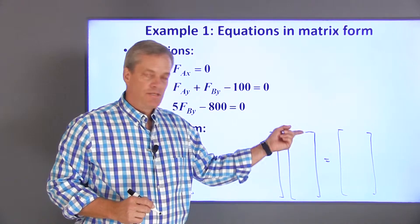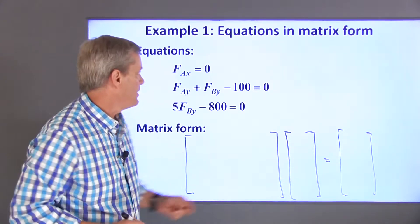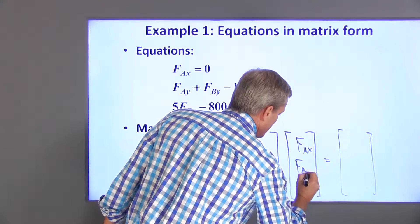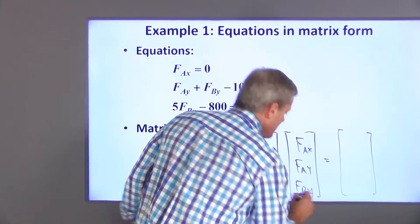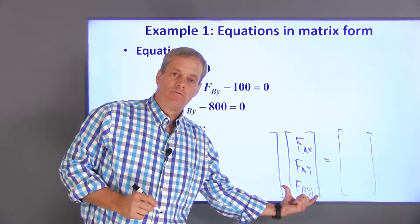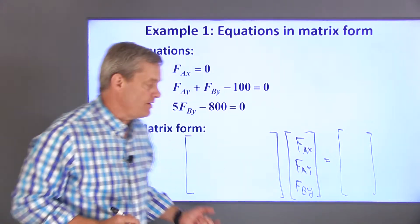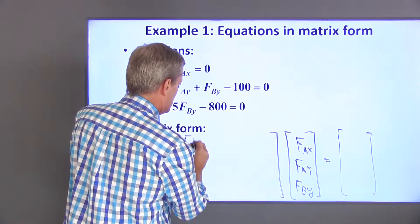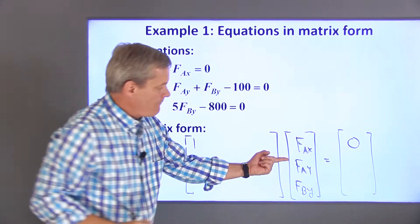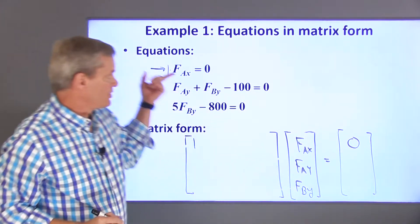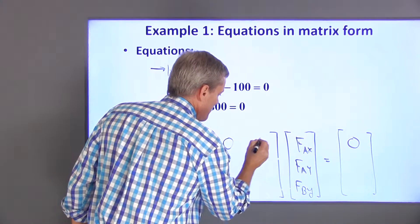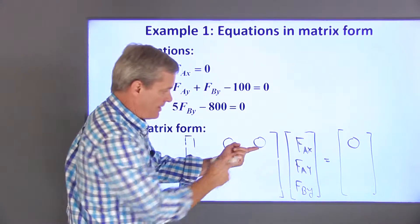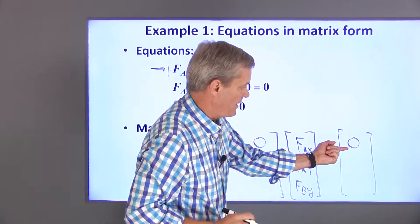The first thing I need to do is decide what order I want my variables to be in the X vector. I'm going to choose them to be in the order FAX, FAY, and FBY. This order doesn't really matter, but I need to decide what it is so that I know how to load the A and the B matrices. The first equation here is 1 times FAX is equal to 0. FAY and FBY don't show up in this equation. I can get rid of them by multiplying them by 0. So this is 1 times FAX plus 0 times FAY plus 0 times FBY is equal to 0.